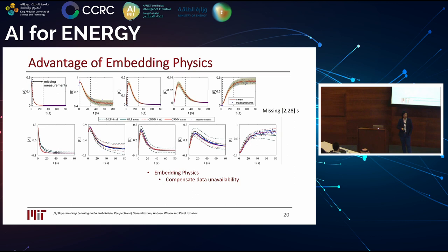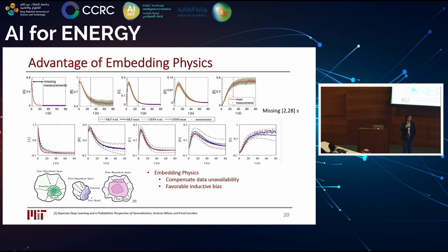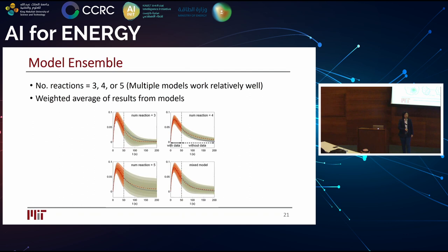By incorporating physics into the neural network, we give it a favorable inductive bias, narrowing the uncertainty range. And if there are multiple models that fit the data well, all physically consistent, we can incorporate these different models together and predict the overall uncertainty considering all possible models.